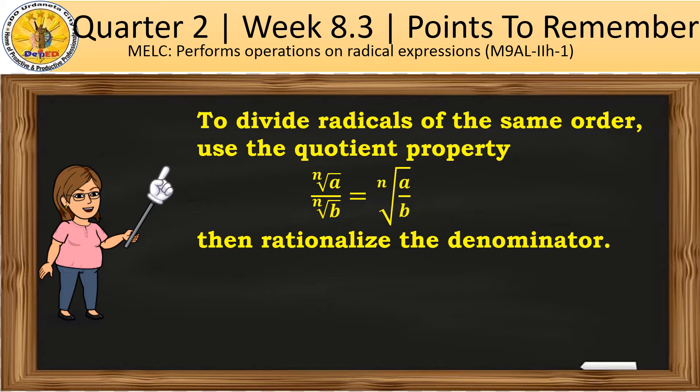The Quotient Property states that the nth root of A divided by the nth root of B is equal to the nth root of A over B. Then after that, you simplify by rationalizing the denominator.